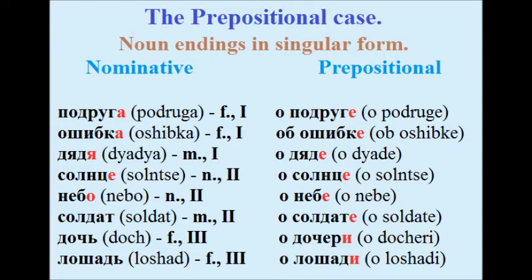Please note that the preposition о is always pronounced as 'а' because it's not a stressed vowel.